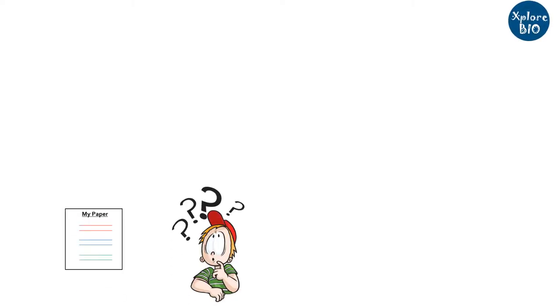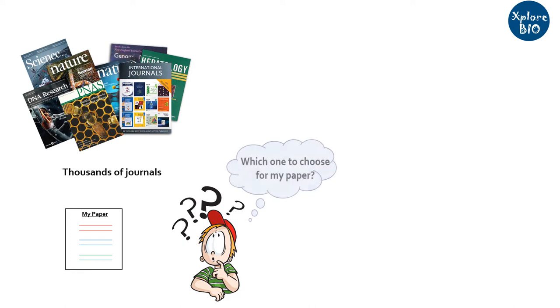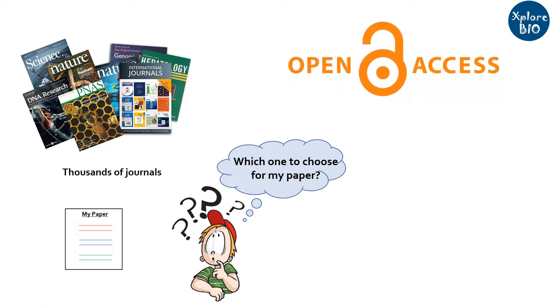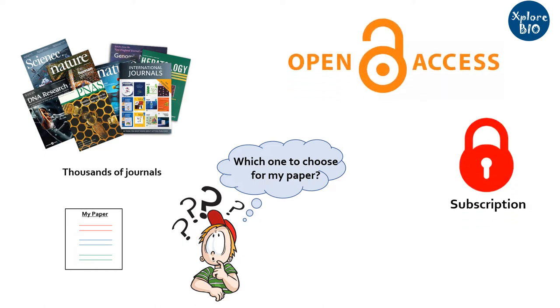After writing a research paper or a review article, one of the major challenges is finding a suitable journal for publishing. While searching, you come across two major types of journals: the open access journals and the subscription-based journals. But which type of journals should you choose?